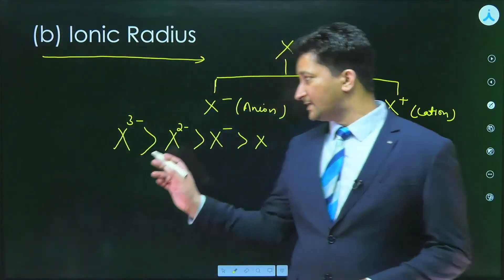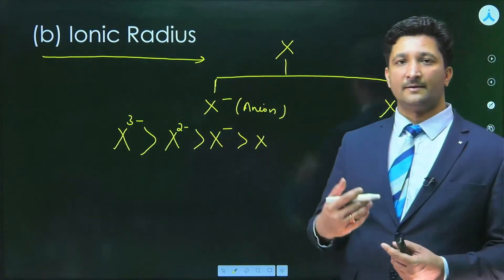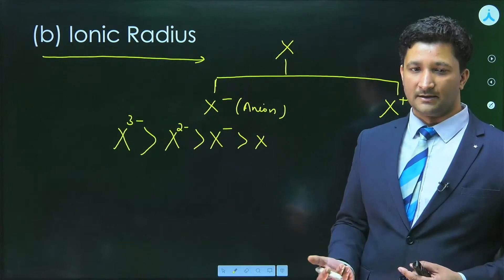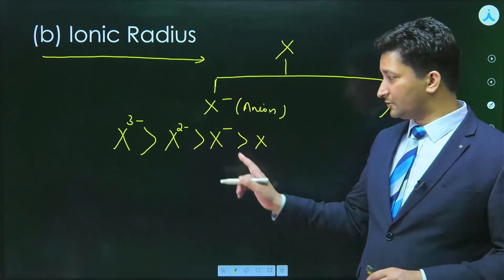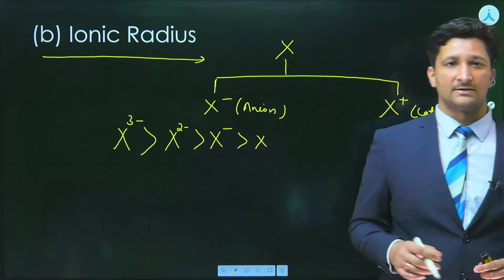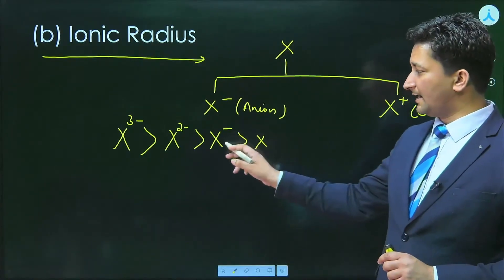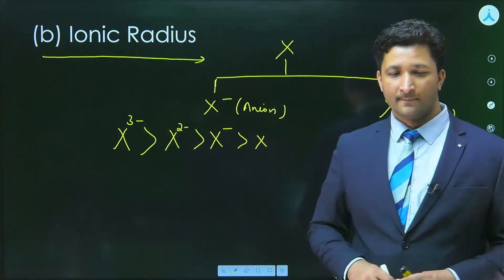So you can see that as the number of electrons being added to the given atom increases, their size increases. Remember one thing: atoms should be same. You can't compare S2 minus with F minus. This element should be same.